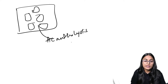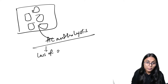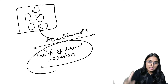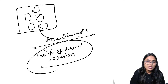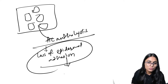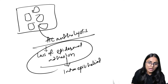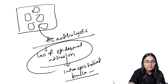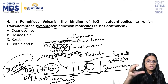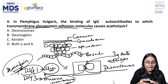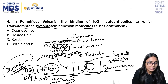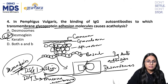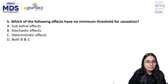This separation of cells is called acantholysis, which is due to loss of epidermal adhesion. Pemphigus is an intraepithelial blister — this acantholysis leads to intraepithelial bulla formation. The glycoprotein molecule affected is desmoglyans, so the answer is Option B: desmoglyans.